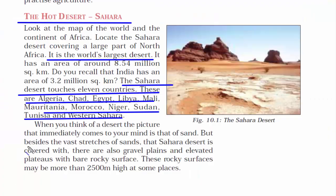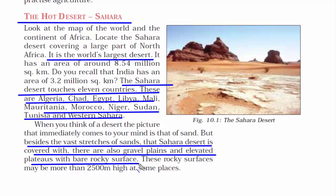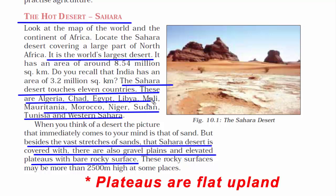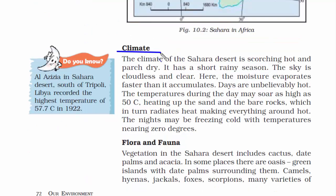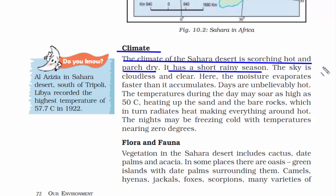The desert is not only covered with sand — it also has gravel plains, i.e. stones and rocks, and elevated plateaus which are upland and flat. The climate of the Sahara Desert is scorching hot and parched dry. Lying in the tropical region close to the equator and being a desert, it has to be hot. It has a short rainy season and scanty rainfall.